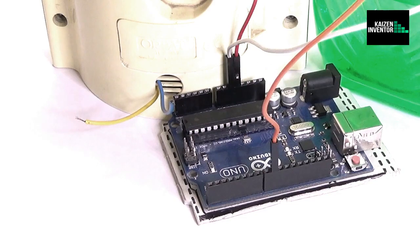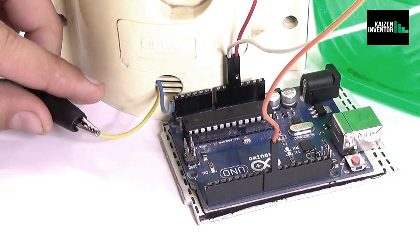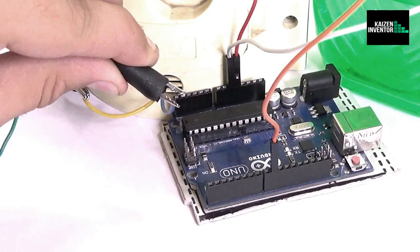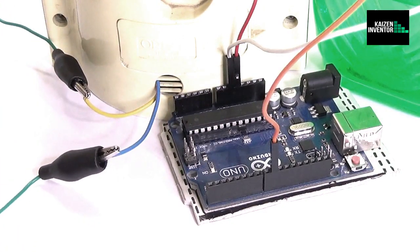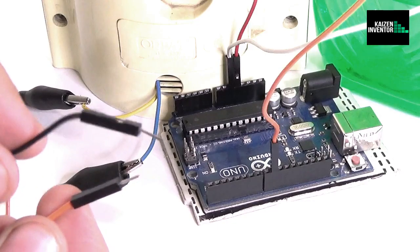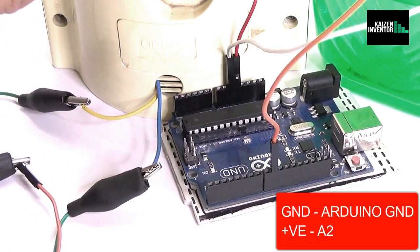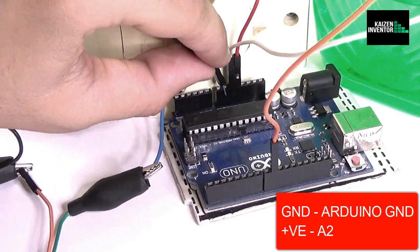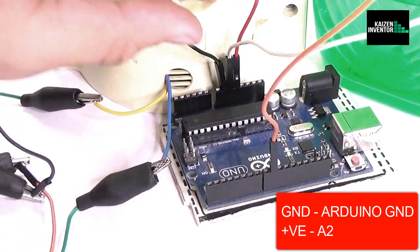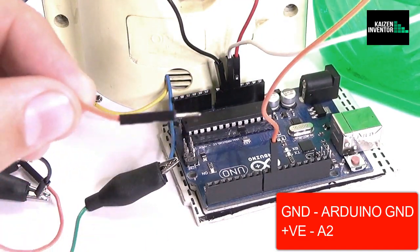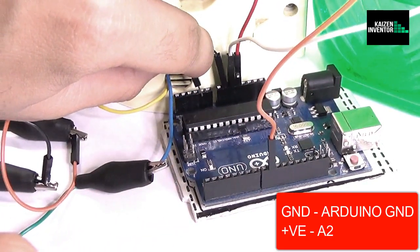So now let's connect the clock wires to Arduino. First clip on the crocodile clips to both the wires coming out of the clock and now extend it with some jumpers. So connect the ground of the clock to Arduino ground so that a common ground could be generated and the signal pin to analog pin 2.